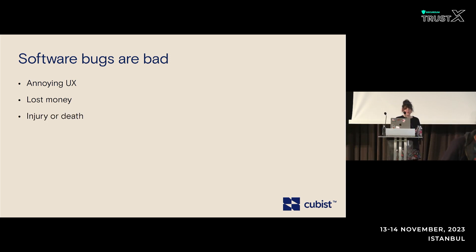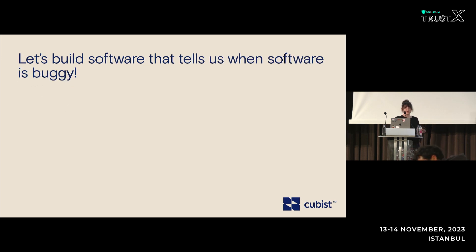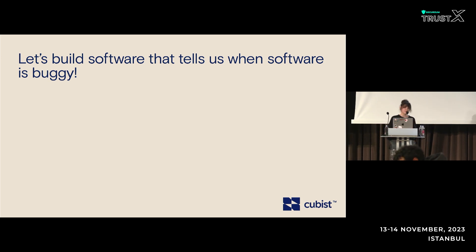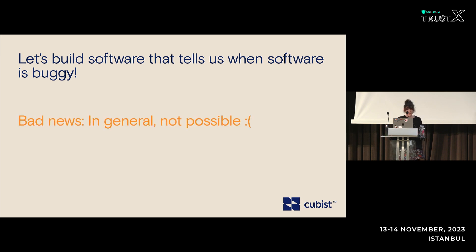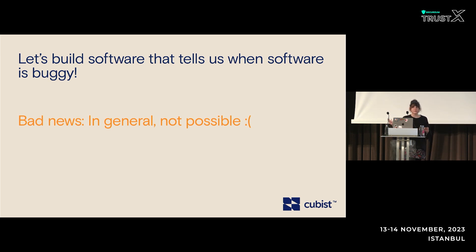Since software is so ubiquitous — it controls everything from cars to planes to trains — software bugs can even have some amount of human costs. So instead of putting up with bugs, let's just get rid of them. Let's build machines that tell us when our software and our smart contracts are wrong. But I'm going to spoil this little fantasy up front and say that unfortunately, there's some bad news: we just can't do this. In the general case, building machines that tell us if other machines are correct is just not possible.